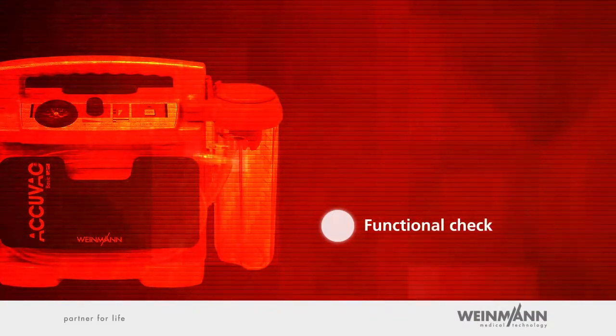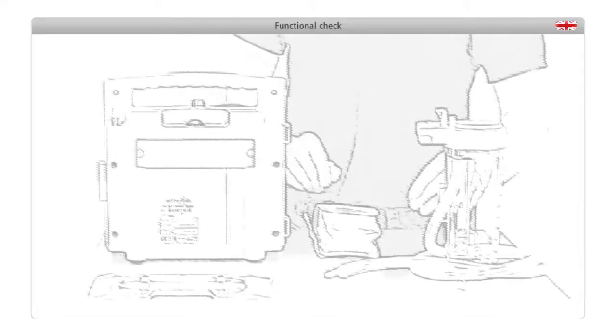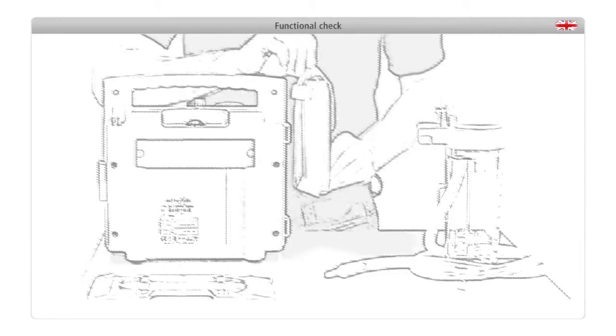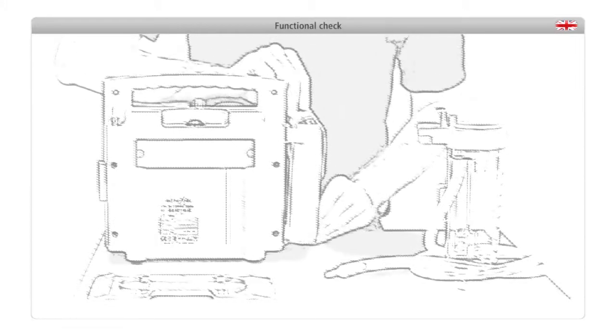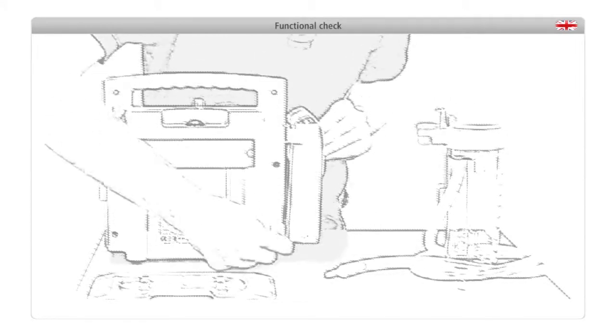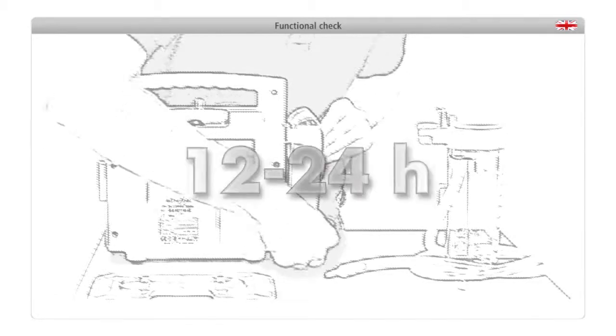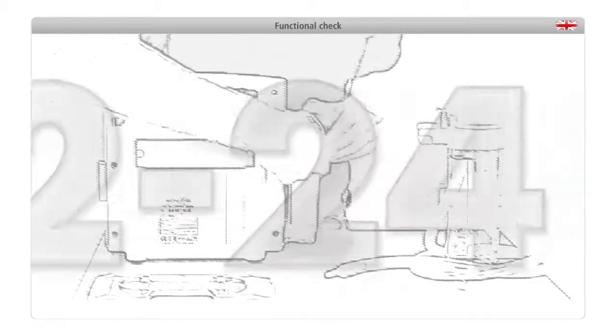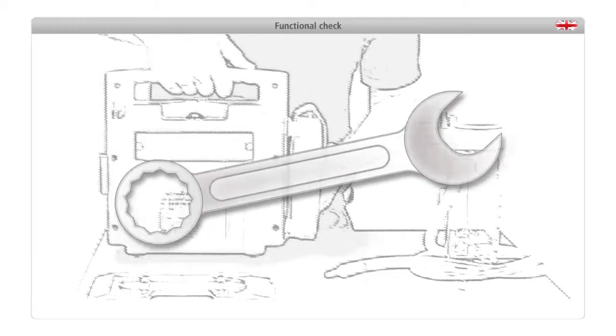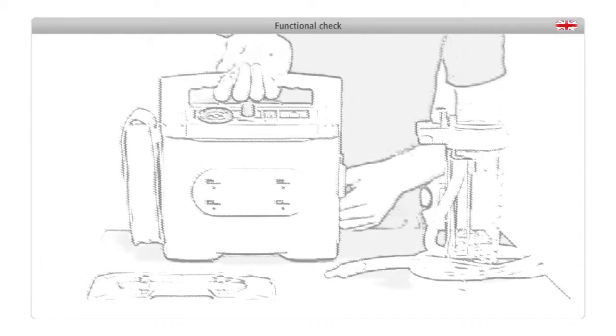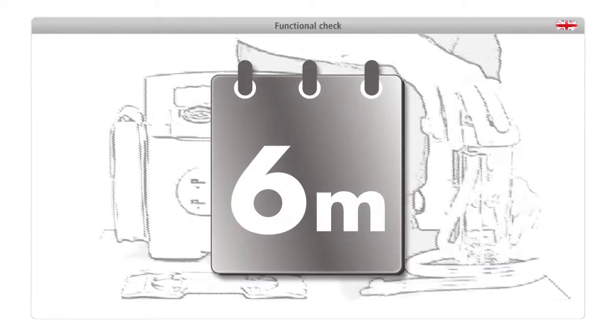Functional check. To ensure that AcuVac Basic is ready for immediate use, carry out a functional check: one, before every use, for instance at the start of every morning shift; two, after every disassembly for hygienic conditioning; and three, at least every six months.